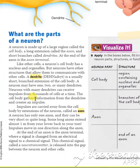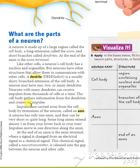What is a dendrite? It is a short branch — you can see these branch extensions of the cell body. They may have one or two dendrites. Neurons with many dendrites can receive impulses from thousands of cells at a time. The cell body gathers information from the dendrites and creates an impulse. Impulses are carried away from the cell body by extensions of the neuron.